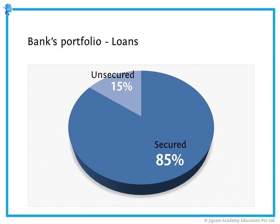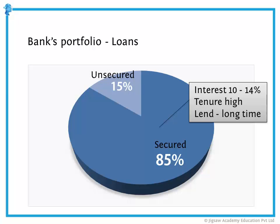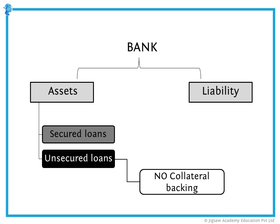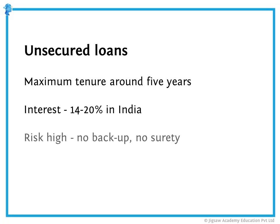The ideal scenario is that close to 85% of the bank's portfolio should be secured loans. If the rate of interest ranges between 10% to 14%, like it does in India, and the tenure is high, the banks will lend this money out for a long time. Unsecured loans, as the name suggests, do not have any collateral, and hence in the event of default, no asset can be attached. The ideal scenario is that the maximum tenure of unsecured loans will be around 5 years, much lower than the tenure for secured loans. The return on investment will be much higher — 14% to 20% in India — because the risk is much higher as there is no backup, no surety.